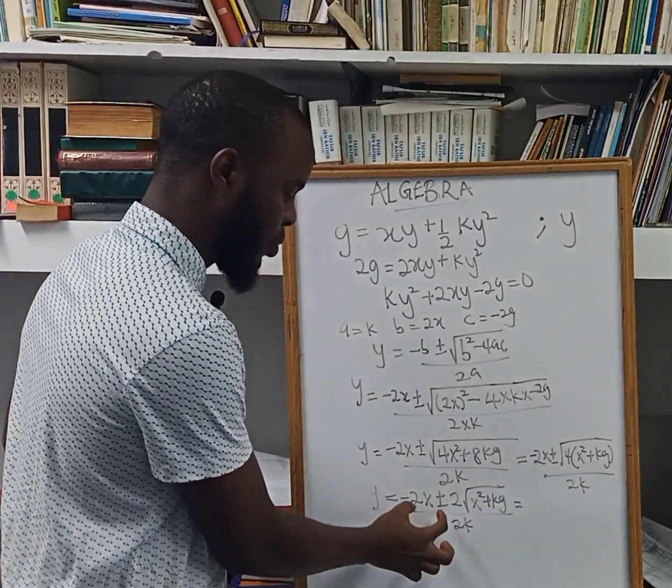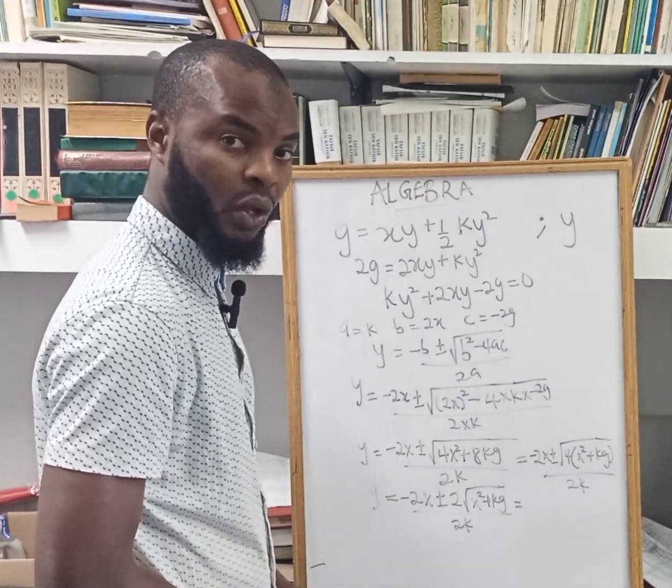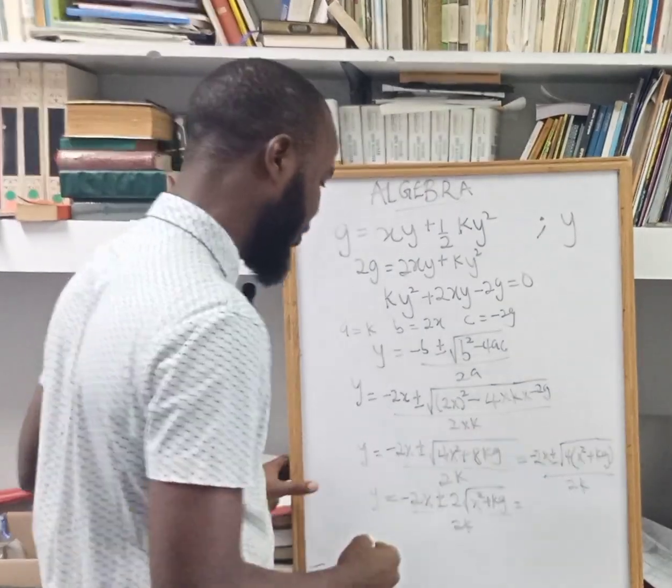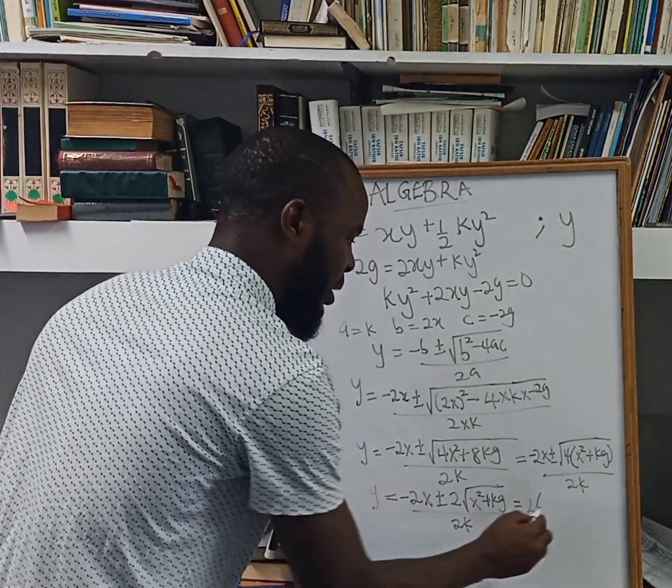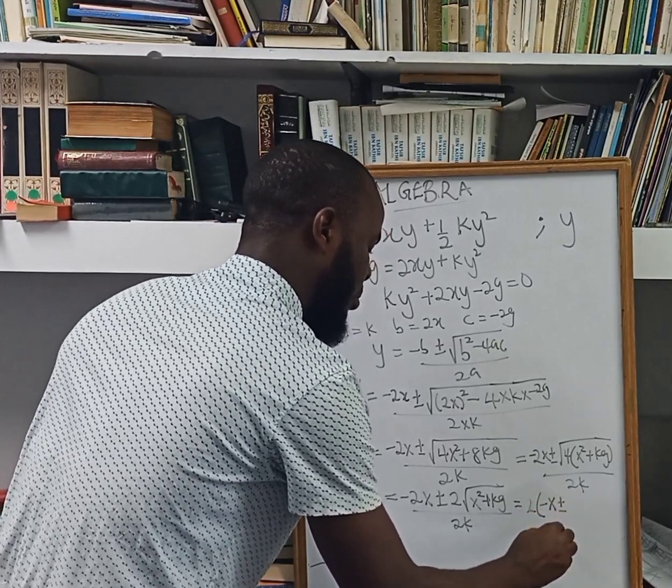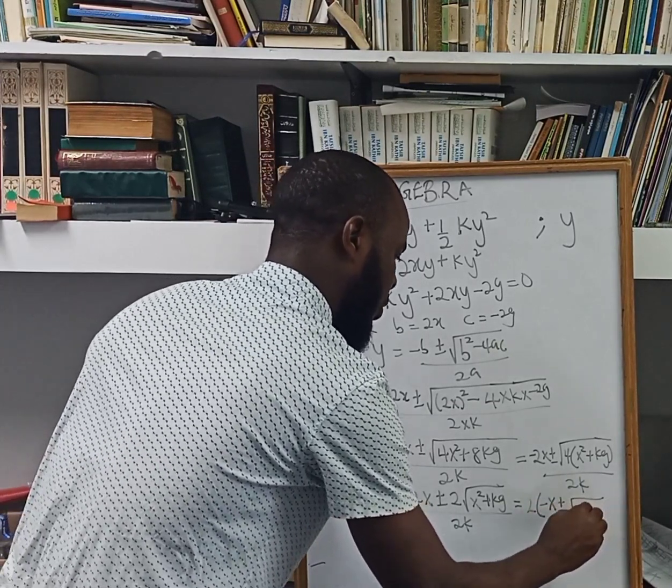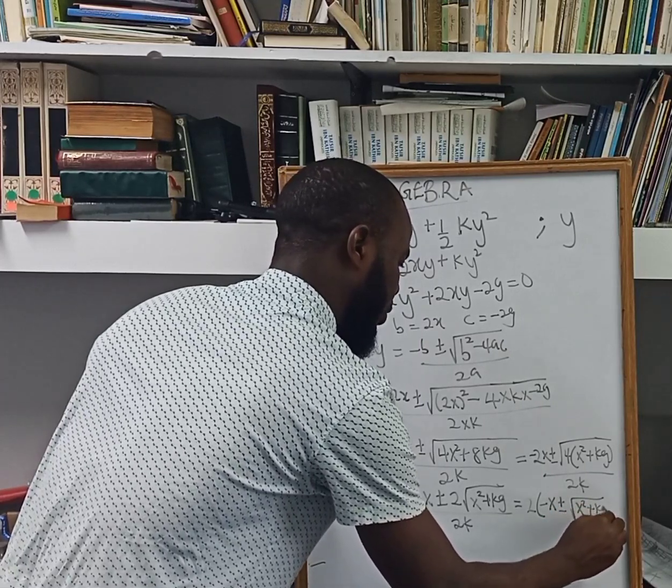So 2 is common to both terms, so we can factor out 2. Factoring out 2, I have 2 times negative x plus or minus root x squared plus 2kg.